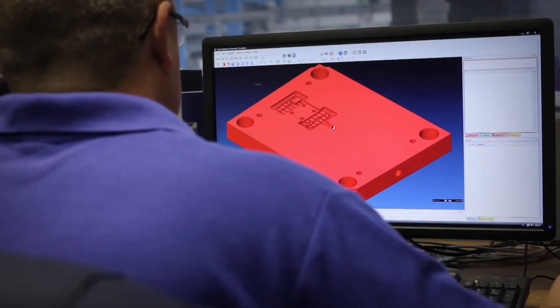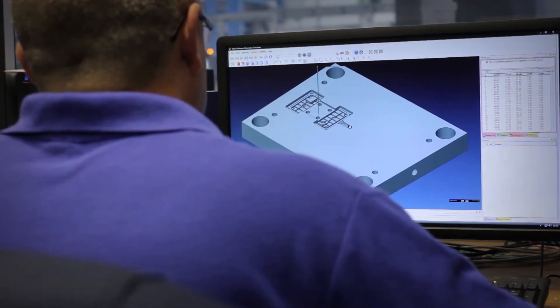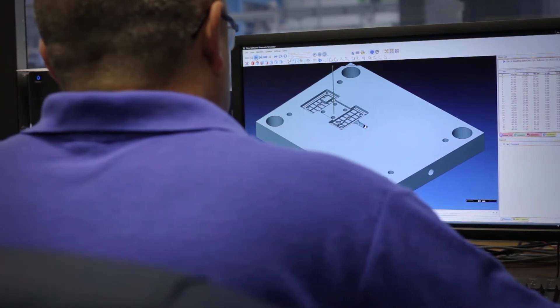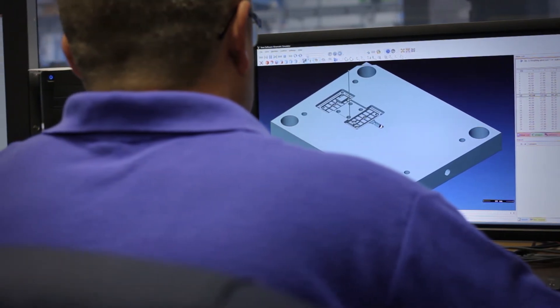The seamless transition is important within the Visi software because when we used to use Machining Strategist we used to have to save out the model either as an IGES file or a STEP file and then import that back into Strategist to be able to machine or make the plate, and obviously there can be certain errors that occur when that happens.